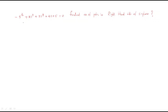Hello everyone, in this session we will discuss some problems regarding the characteristic equation. The given equation is s⁴ + 2s³ + 3s² + 4s + 5. Find out the number of right-hand side poles of the s-plane.